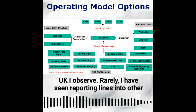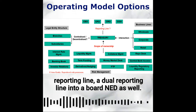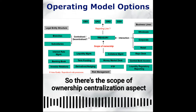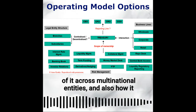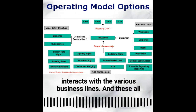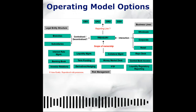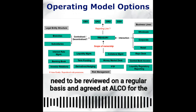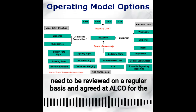I have seen reporting lines into other C-suites, and on one occasion I've seen a dual dotted reporting line into a board NED as well. So there's the scope of ownership, the centralization aspect across multinational entities, and how it interacts with the various business lines. All of these need to be reviewed on a regular basis and agreed at ALCO up to the board of directors.